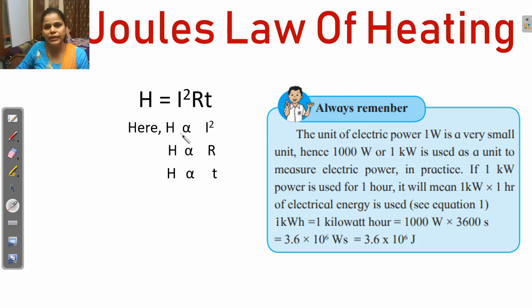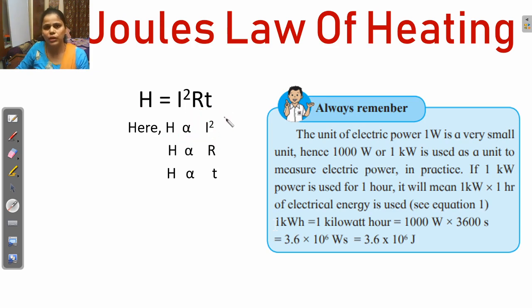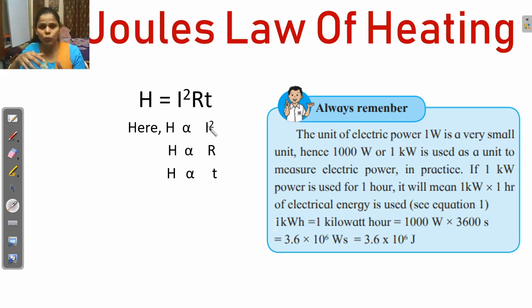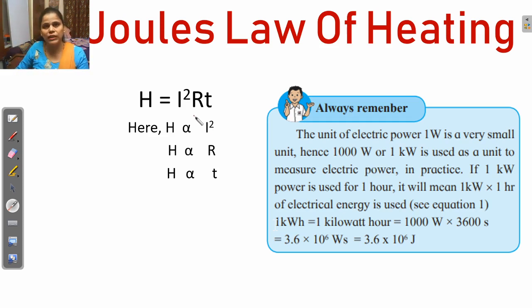Heat is directly proportional to I squared. The meaning of this is: if we double the current flowing in the circuit, then the heat produced in the electric circuit will be four times.